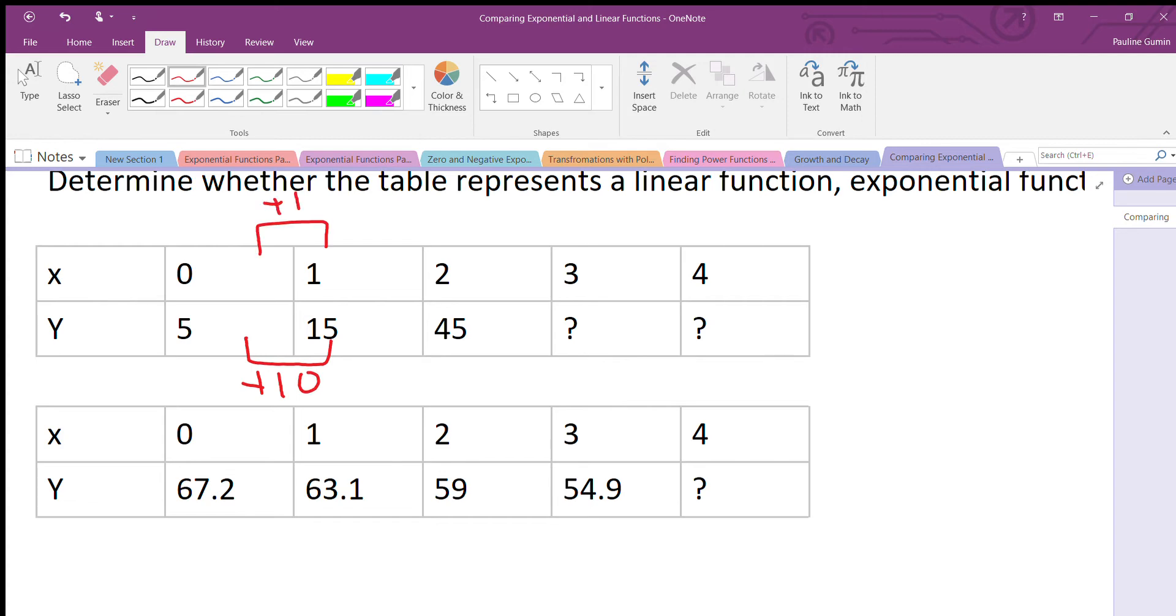That's our first rate of change. Let's see our second rate of change. To get from 15 to 45, plus 30, and I stop right there. 30 is not the same thing as 10, right? It's not constant. It's definitely not linear.